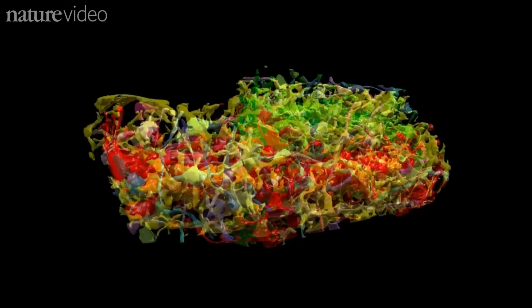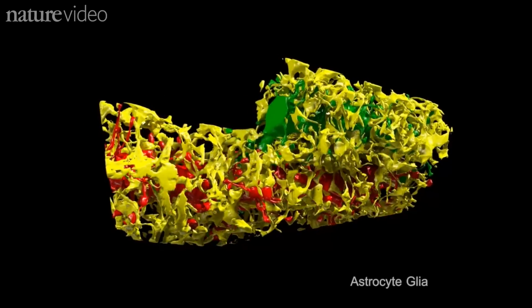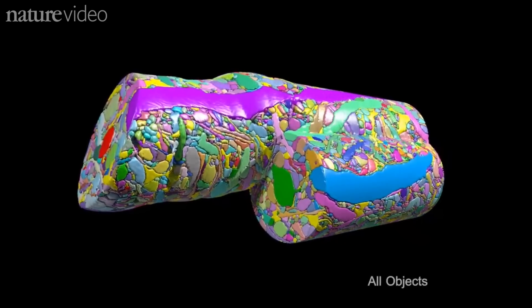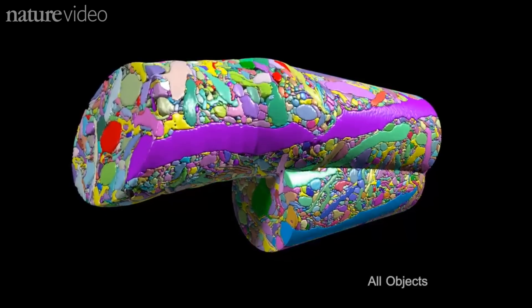And, not forgetting, the non-neuronal cells, like these glia, which support the neurons and help them send messages to each other. All in an area smaller than a dust mite.